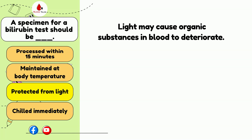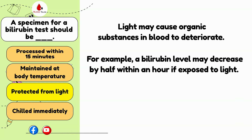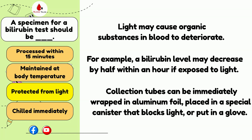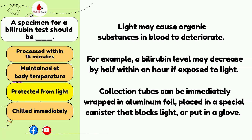For example, bilirubin levels may decrease by half within an hour if exposed to light. Other blood tests that require specimens to be protected from light include Vitamin A, Vitamin B6, beta-carotene, and porphyrin. Collecting tubes may also be immediately wrapped with aluminum foil or placed in specimen containers that block light. Sometimes phlebotomists also wrap the tube in gloves for convenience, as it also protects from light.